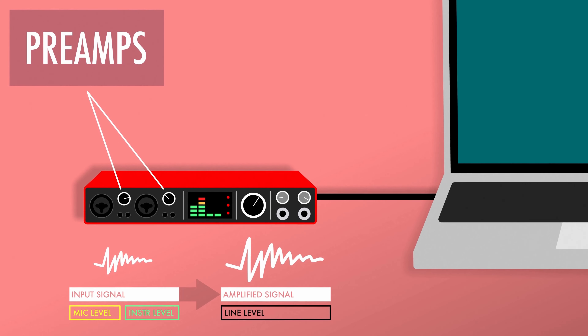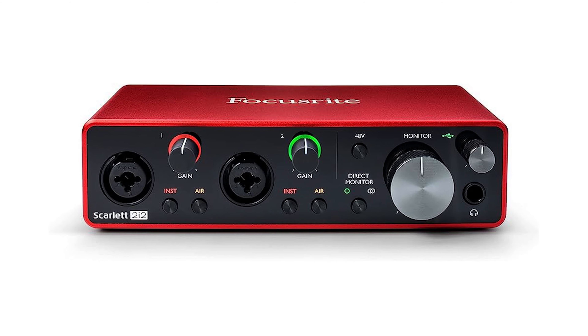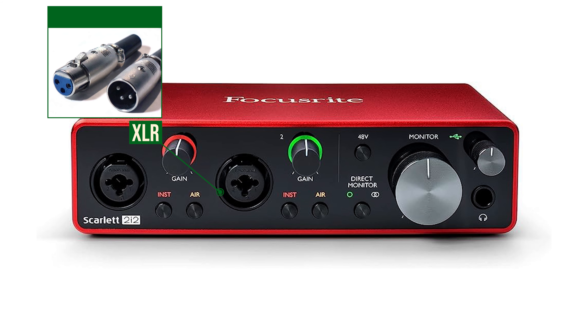Secondly, we have the preamps. The signals from microphones and instruments — called mic level and instrument level respectively — are quite low in voltage, and have to be amplified to what is called line level before they go through the A-to-D converter. So when you plug in your cable to the mic or instrument input on an audio interface, it's actually going through a preamp before it finds its way onto your computer as a digital signal. Now that we know what's on the inside of an audio interface, let's have a look at what's on the outside.